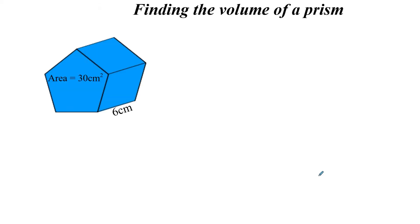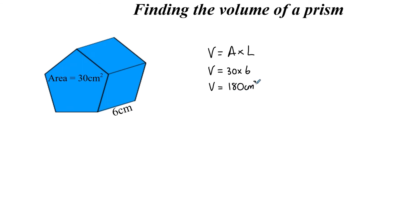Next we look at finding the volume of a prism. We've already seen a few prisms — the cuboid and the cylinder are both prisms. A prism is a shape with the same cross-section all the way through — it doesn't taper or widen. The volume of any prism is the area of the cross-section times the length of the shape. Here it's 30 times 6, which is 180 cm cubed.